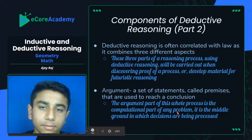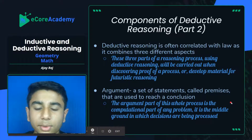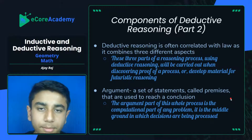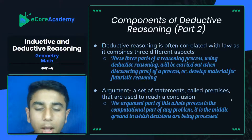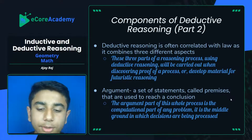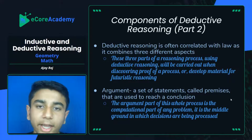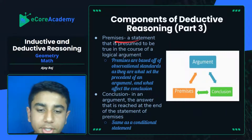The argument is the middle ground in which decisions are being processed. In a geometric problem, the situation given to you — your premise — is your input, which you take as true and then solve. The solving and calculation part is the argument, and your final answer laid out at the end of the problem is your conclusion. The conclusion most likely comes at the end.